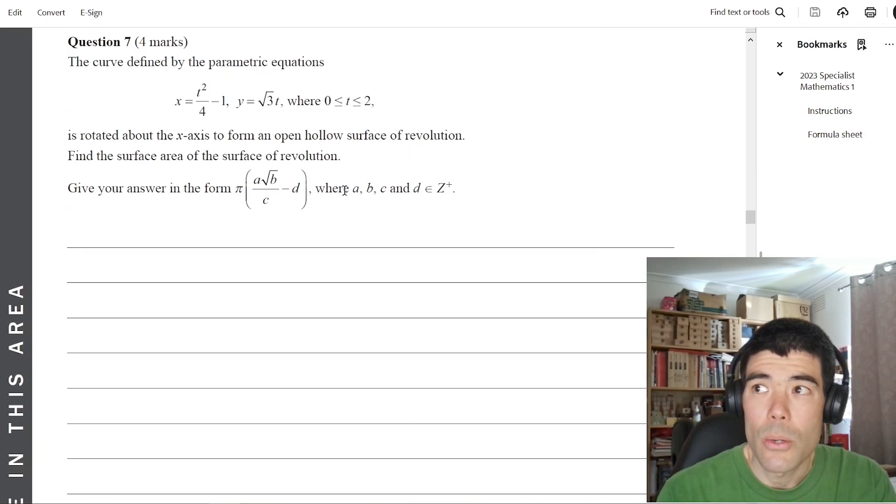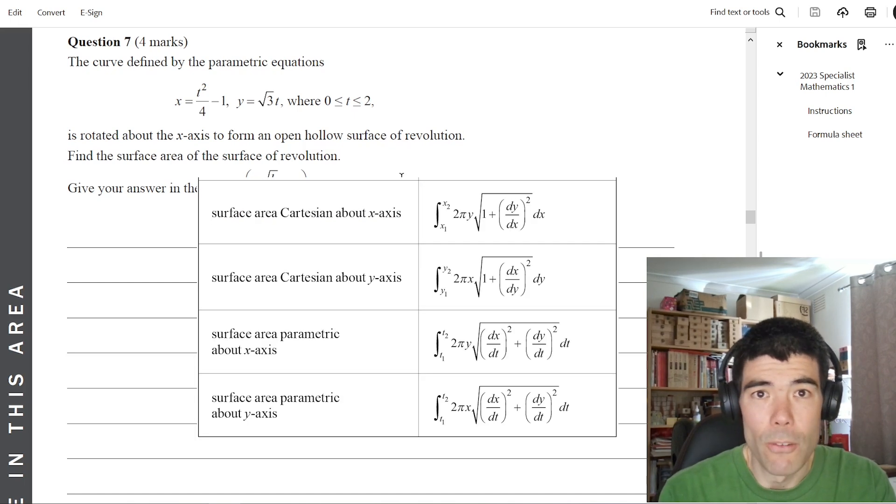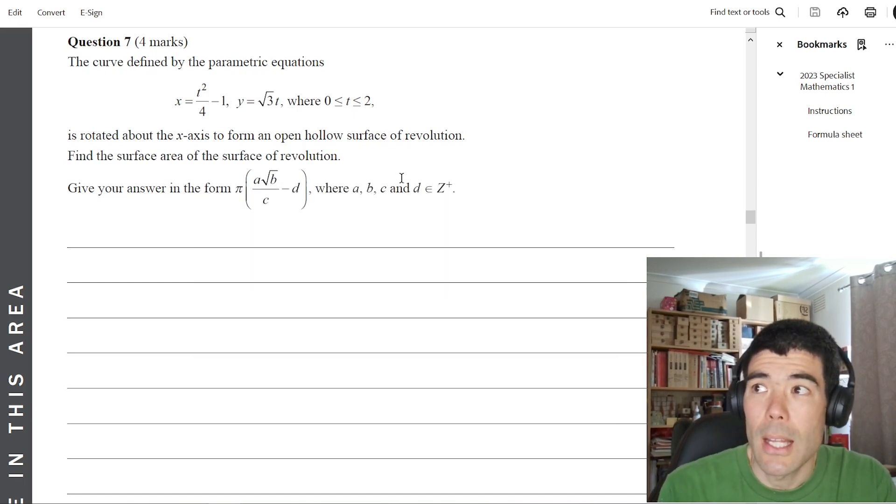Question seven is a surface area question. Again, new to the study design, 2023, we're using a formula from our formula sheet. Again, that's a new formula. And then obviously work out the integral. In this case, it was a u substitution, I believe.